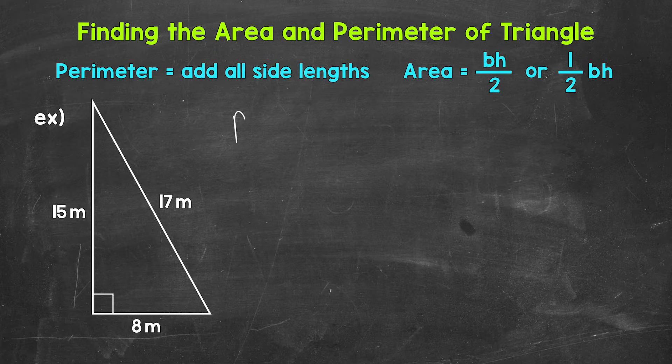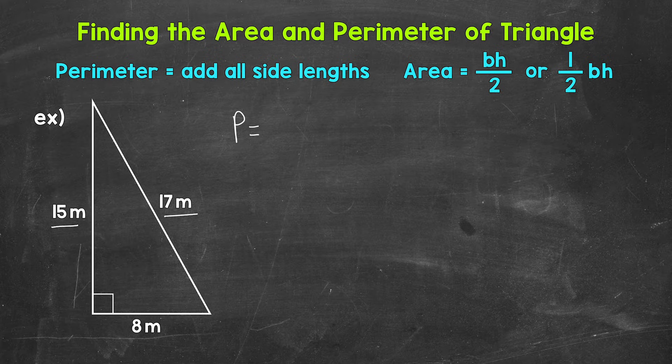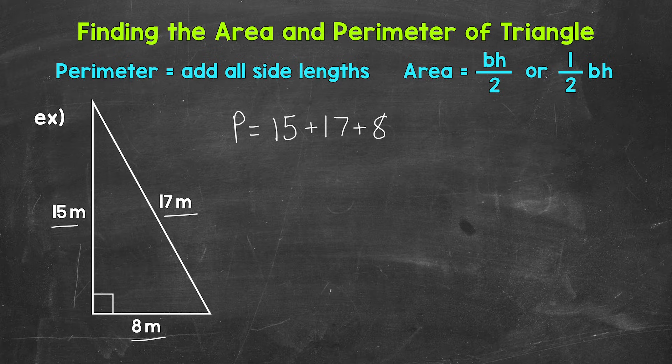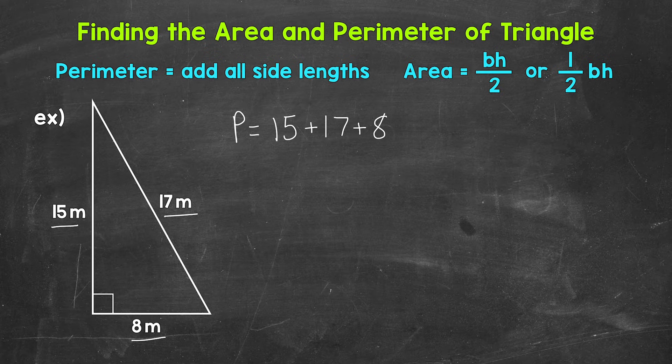So perimeter equals, and then again for perimeter, we need to add all of these side lengths. So we have 15 meters, 17 meters, and 8 meters. So 15 plus 17 plus 8. Keep in mind, it doesn't matter what order you add the side lengths in, you'll get the correct perimeter however you do it.